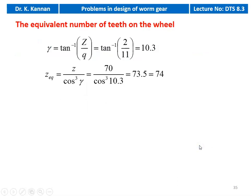We calculate the equivalent number of teeth on the wheel. First we require the lead angle gamma = tan⁻¹(number of starts / Q) = tan⁻¹(2/11) = 10.3°. Z_equivalent = Z / cos³(gamma) = 70 / cos³(10.3°) = 73.5, which we round up to 74.